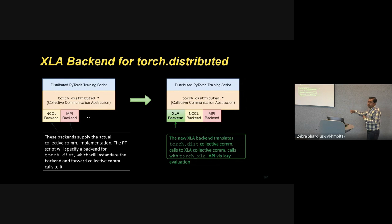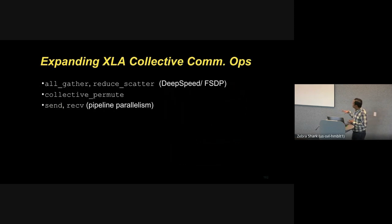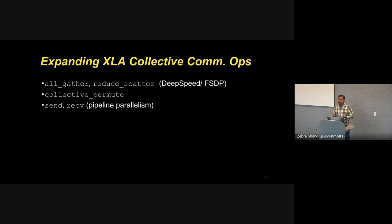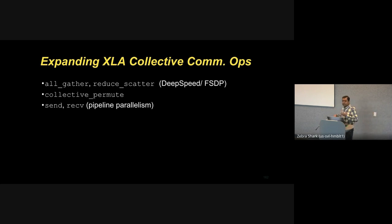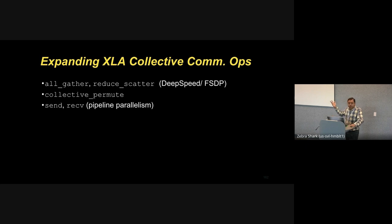In the process, we also identified opportunities to add primitive collective communication ops to XLA itself — like all-gather and reduce-scatter for DeepSpeed or fully sharded data parallel, and send-and-receive for pipeline parallelism. The need arose because early XLA targets had underlying optimizations that didn't require some of these ops, but porting to GPU and Trainium requires these primitive ops to be passed down to the respective library for the new hardware targets.